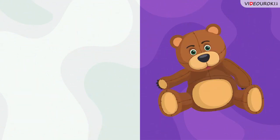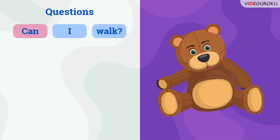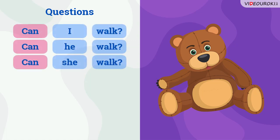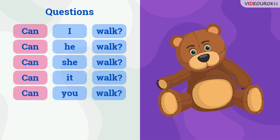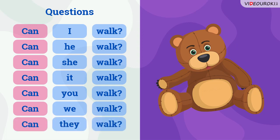To form questions we say: Can I walk? Can he walk? Can she walk? Can it walk? Can you walk? Can we walk? Can they walk? Look at the examples.